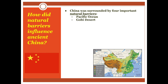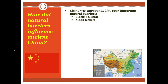The second natural barrier is the Gobi Desert on the north side of China. The Gobi Desert was important because even though it was flat, it's very hard to get across a desert. And because it's very hard to get across a desert, it's very hard to invade China from across the desert due to the lack of food and water for an invading army.